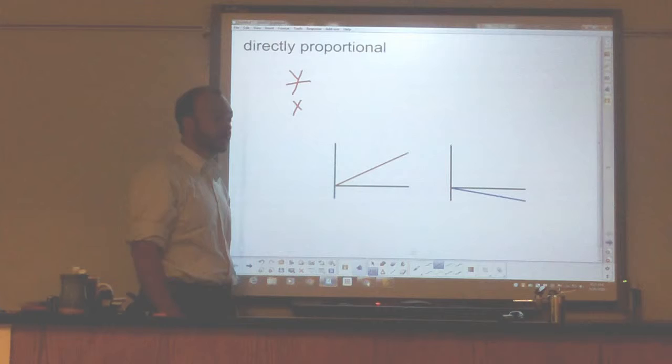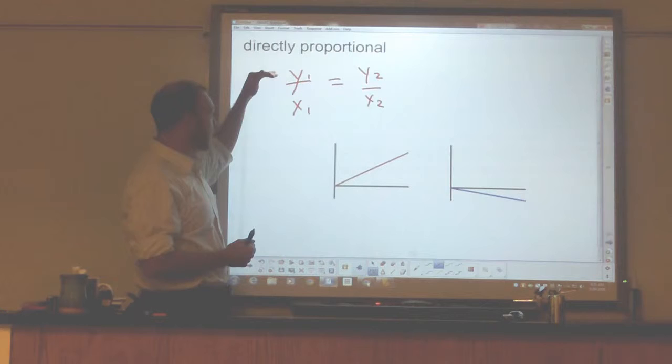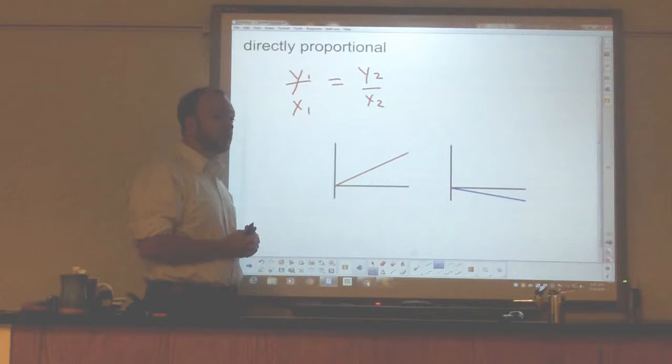To make it into a proportion, in a proportion we compare two ratios or we set two ratios equal. So a proportion would look something like this: one y value over one x value is the same as another y value over another x value. This is showing us a proportion, and it's saying that y and x always have the same proportion to each other. They always come out to be the same value.